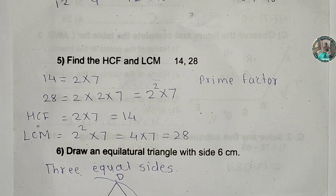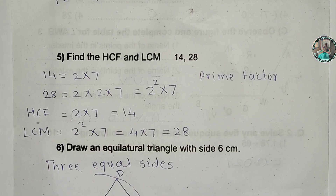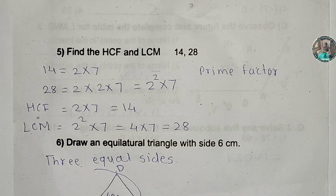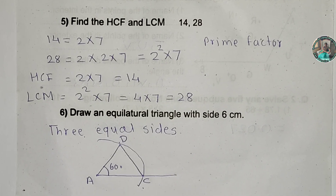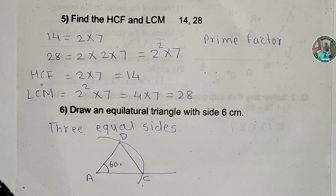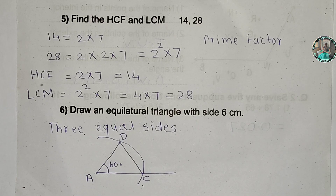Draw an equilateral triangle with side 6 centimeters. All sides are the same — 6 centimeters. Draw it in this way. We have finished the whole paper. This is a practice paper.